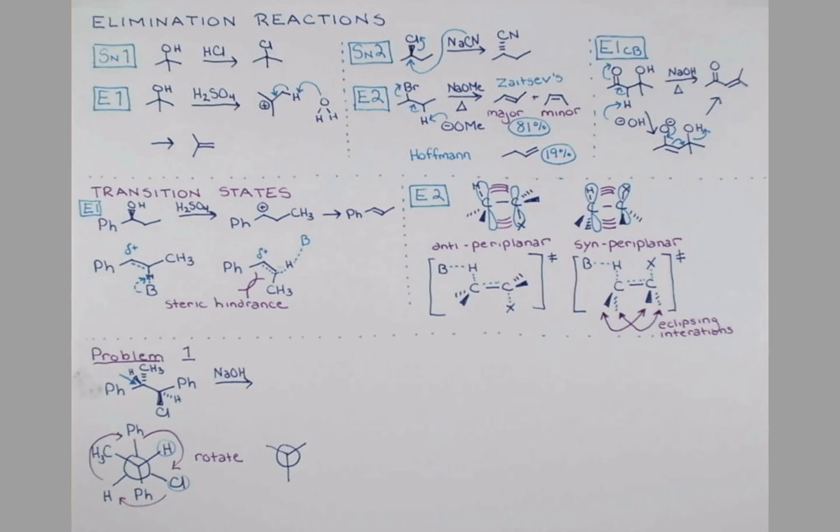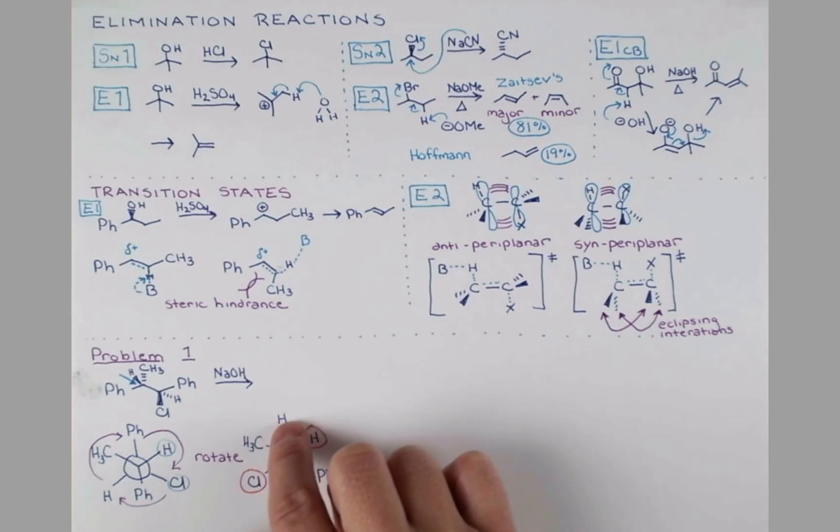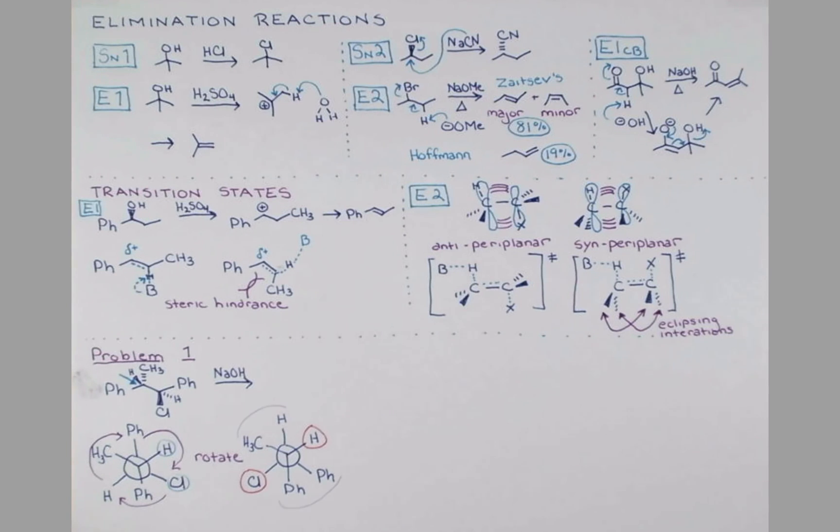We kept our front carbon atom oriented the same way, so let's just redraw these groups in the same spot. And now we'll draw our back carbon with everything rotated 120 degrees. I've circled these in red. They're the groups that are going to be eliminated. And now it gets pretty easy for me to see the product from this particular structure.